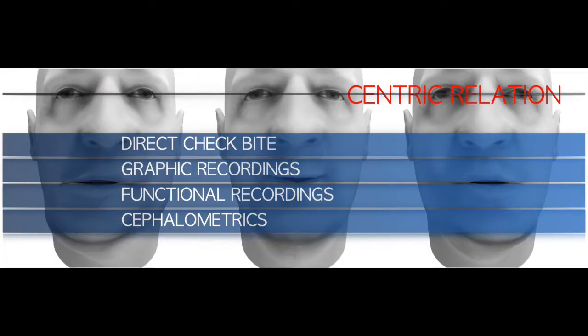Now we will talk about centric relation. In the past, many different methods were used to determine centric relation: direct check bite, graphic recording, functional recording, and cephalometric method. Recently, functional recording and cephalometric methods have fallen out of use — one is not practically easy, and cephalometrics requires radiographic exposure. Therefore, the most commonly used methods are either direct check bite or graphic recording.